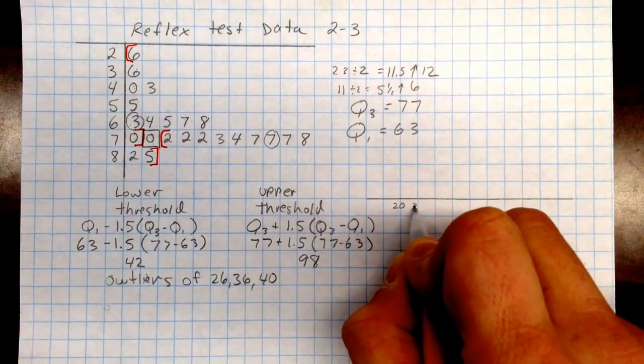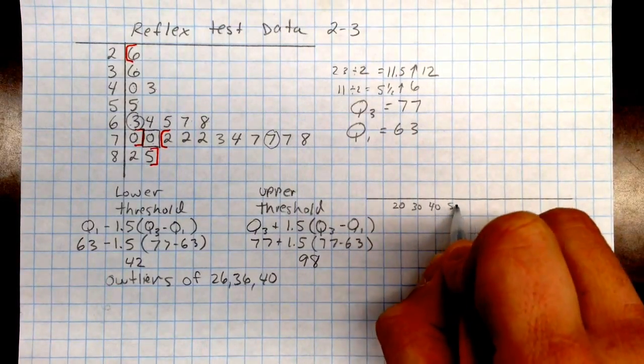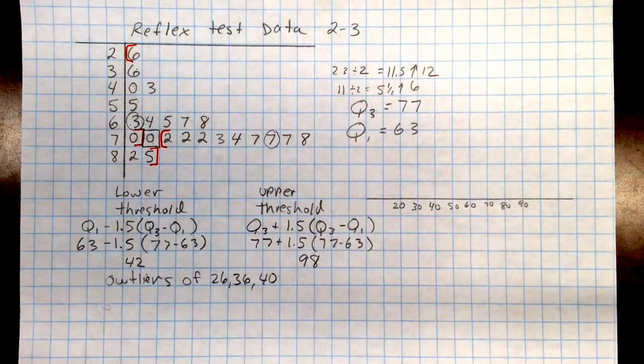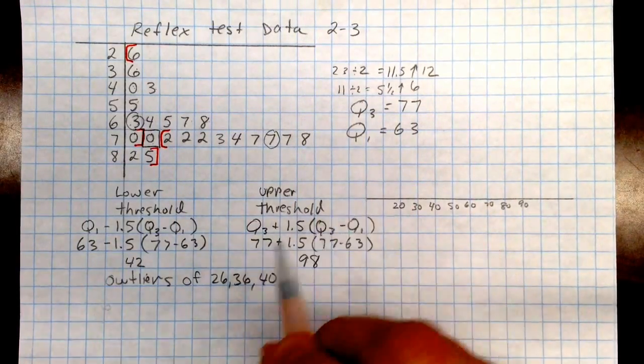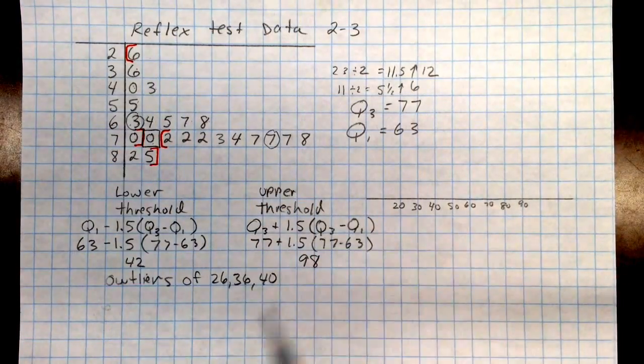So 20, 30, and so on, 40, 50. Make sure that when you're doing this also that you look carefully at the numbers and make sure you have a wide range. You don't cut things off or not include numbers.